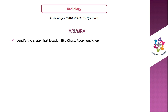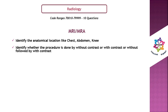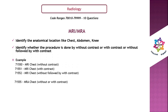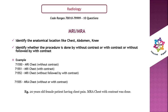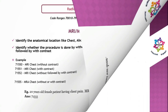Number 3: MRI or MRA. Identify the anatomical location (chest, abdomen, knee) and contrast type. For example: 71550 = MRI chest without contrast; 71551 = MRI chest with contrast; 71552 = MRI chest without followed by with contrast; 71555 = MRI chest without or with contrast. Scenario: a 20-year-old female with chest pain, MRA chest with contrast — the answer is 71555.